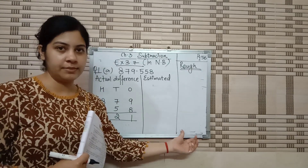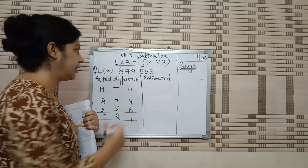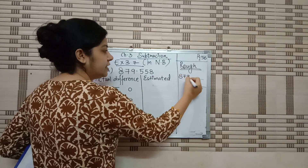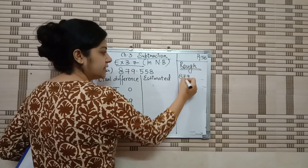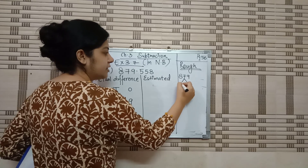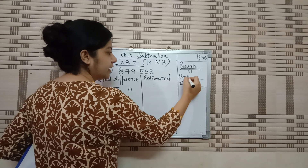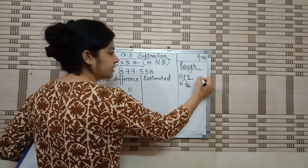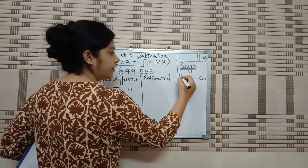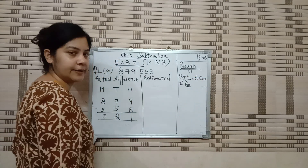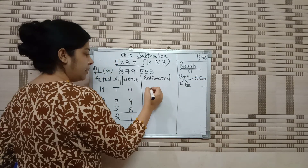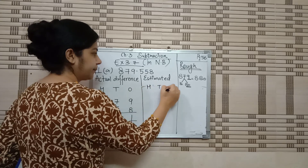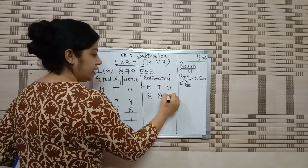Now, as we have done previously, we will make a rough column for rounding off. So, 879 — we have to round off to nearest tens. At the tens place it can be 70 or 80. Since the units digit is 9, we round off to 80. The hundreds place we write as it is. So our first rounded term is 880.